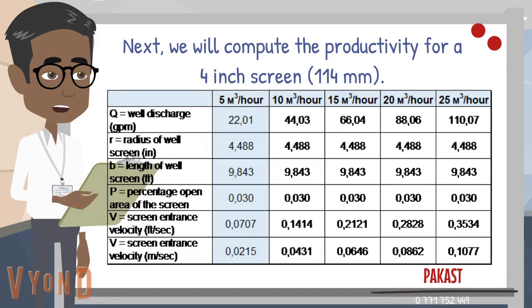The thickness of water layers in Uganda is 10 meters or more. So it is possible to install 3 casing screen pipes of 3 meters long into the well with this thickness. Therefore, there will be a triple margin of the possible productivity of the borehole.